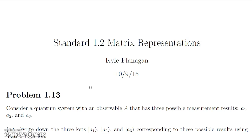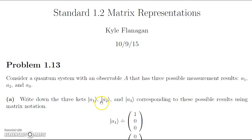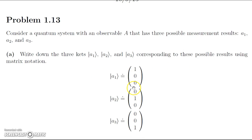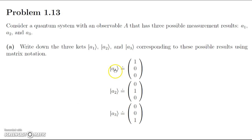We're going to start by writing the three kets that represent these eigenvalues — the eigenvectors corresponding to these possible results — using matrix notation. Since we're working in the A basis, we can represent A1 as (1,0,0), A2 as (0,1,0), and A3 as (0,0,1). This is really nice and will make calculations for things such as probability simple, because the i-th entry corresponding to the i-th state vector is 1 and the rest are 0s.